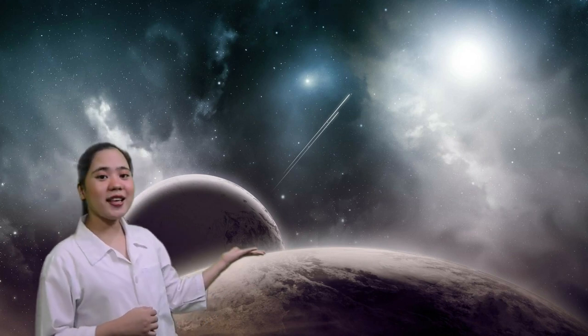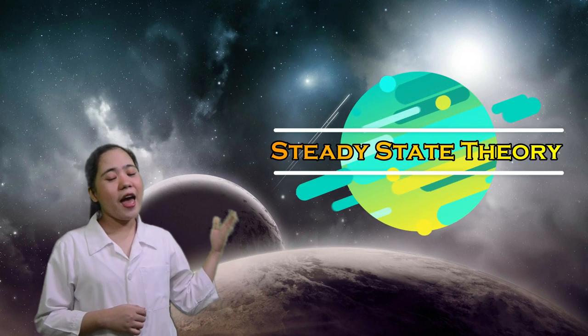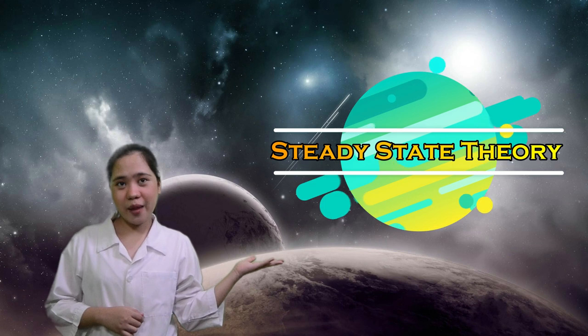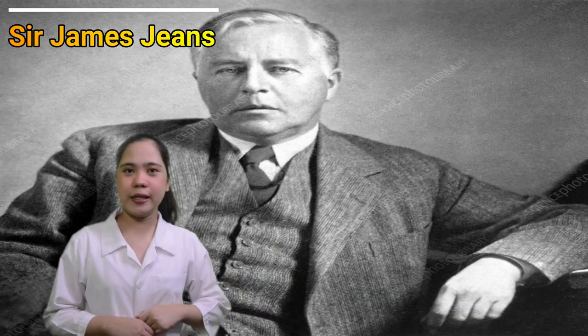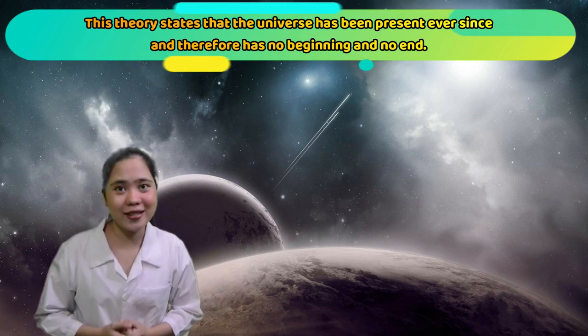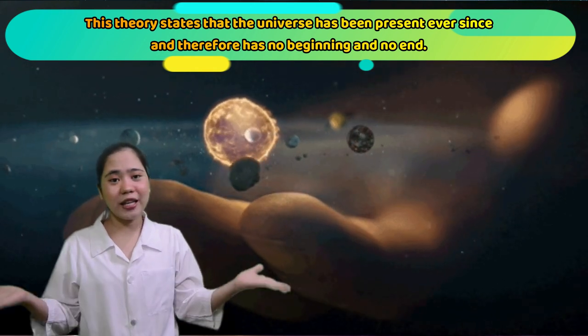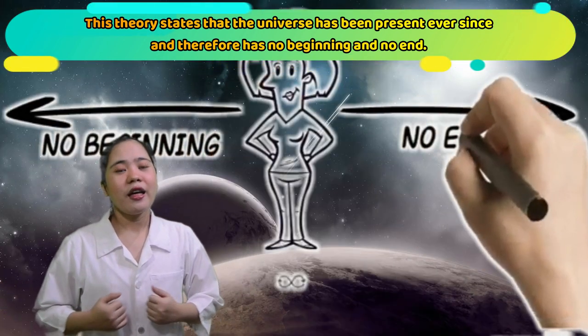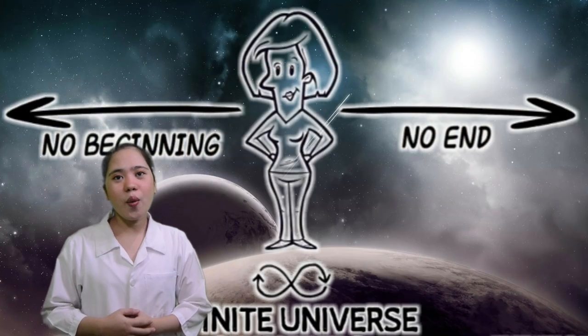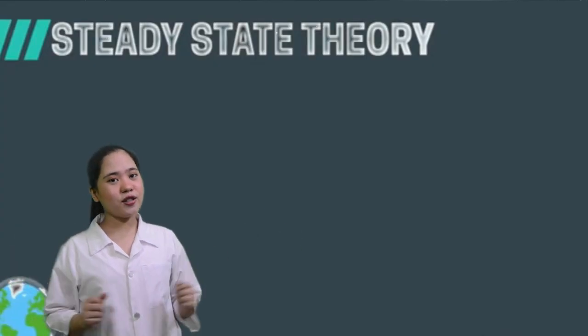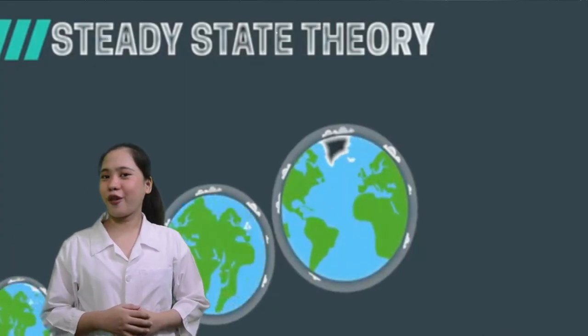The next theory is the Steady State Theory. And it was proposed by Sir James Jeans in 1920. This theory states that the Universe has been present ever since. And therefore, it has no beginning and no end. This Universe is always expanding and its appearance remains the same over time.